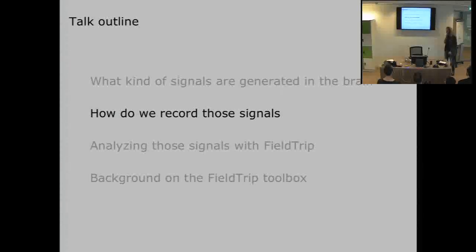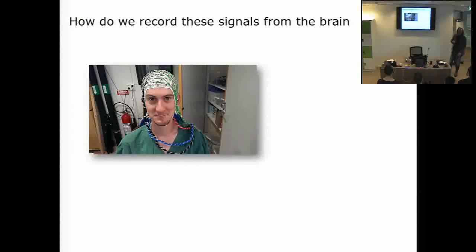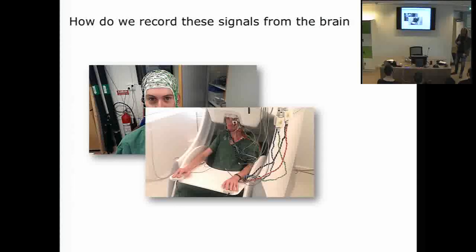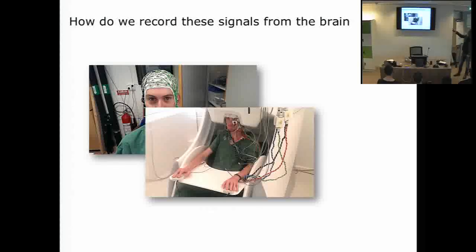How do we pick up these signals? Most of you are familiar with putting on a cap with electrodes, injecting gel under each electrode, attaching them to a small amplifier, and amplifying the potential difference from the scalp. Here at the Donders, we use MEG a lot. We put the subject under an MEG scanner, and in principle we can also record EEG simultaneously. However, we tend not to record EEG with MEG because the preparation time makes the experiment longer and leaves less time for vigilant task performance.